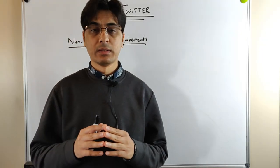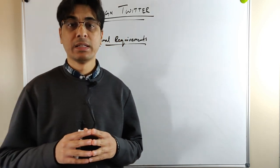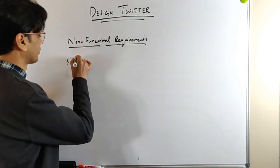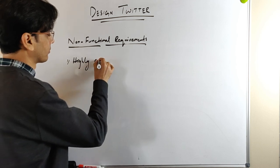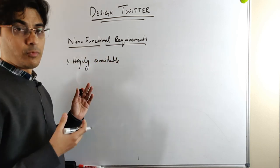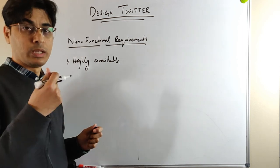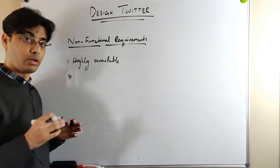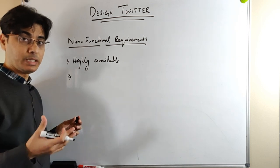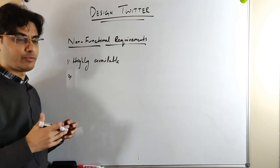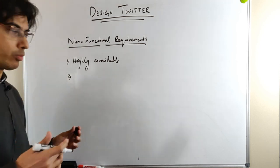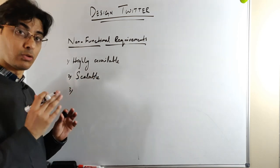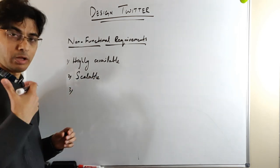Now let's discuss the non-functional requirements. The very first is we would like our service to be highly available — users should be able to post tweets or read tweets without downtime. The second non-functional requirement is that the service is highly scalable, so as the number of users and tweets increases, our service scales as well. The third is we would like our service to be performant.